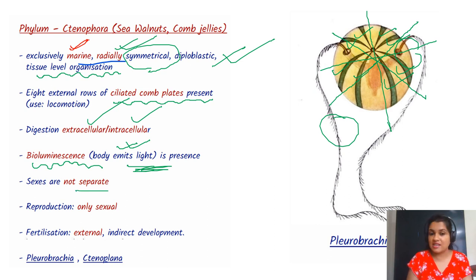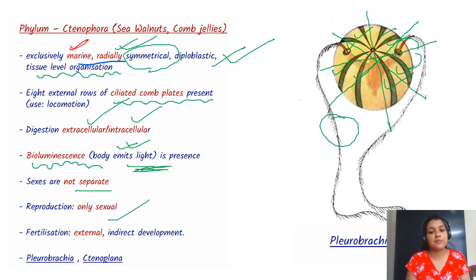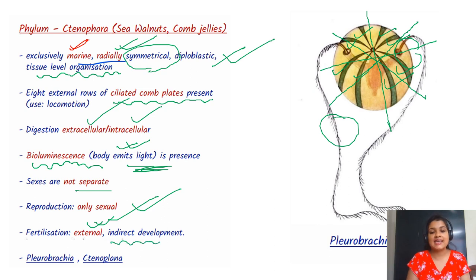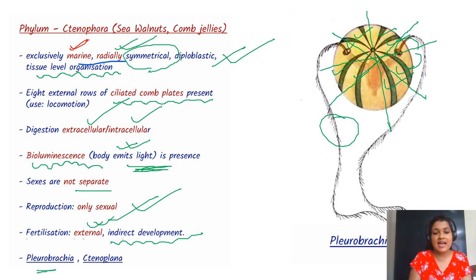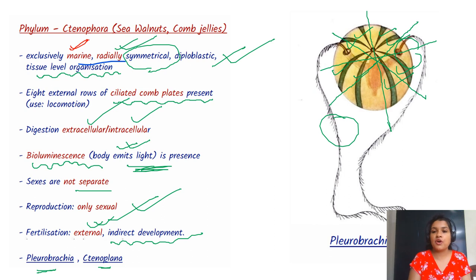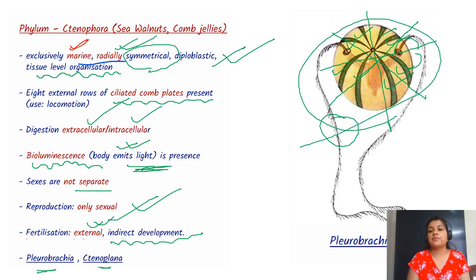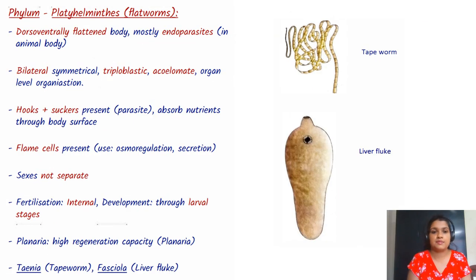Sexes are not separate, so we can call them hermaphrodite. Reproduction is only sexual, fertilization external, and development indirect. Two examples are Pleurobrachia and Ctenoplana.